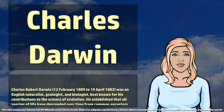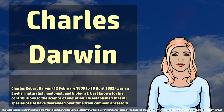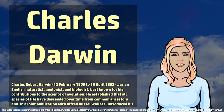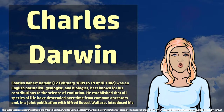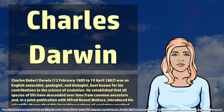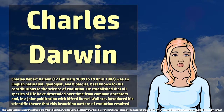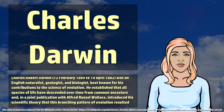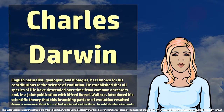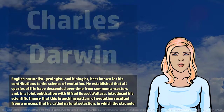Charles Robert Darwin, February 12, 1809 to April 19, 1882, was an English naturalist, geologist, and biologist, best known for his contributions to the science of evolution.